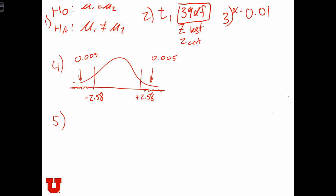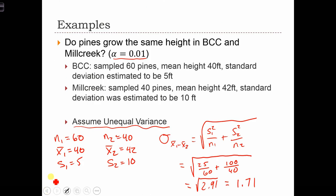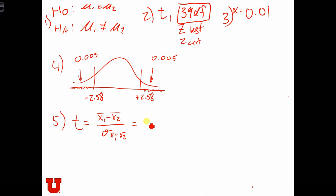So 5 is, let's compute the test. So we've got t equals x1 bar minus x2 bar over the standard error, which equals the difference between the two tree height averages, 40 and 42, 40 minus 42 over 1.71, which equals 2 over 1.71.